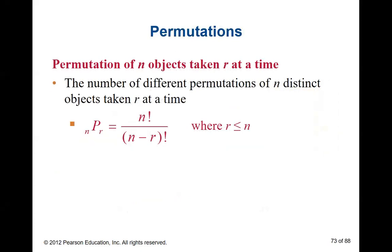There is a formula we use when working with a permutation. The symbol uses P in the middle: N before it stands for the number of objects you're choosing from, and R after it is the number of items you want to pick. A permutation of N things taken R at a time equals N factorial divided by (N minus R) factorial, where R must be less than or equal to N.